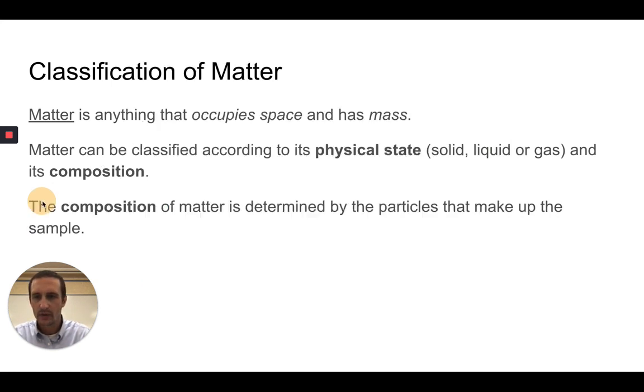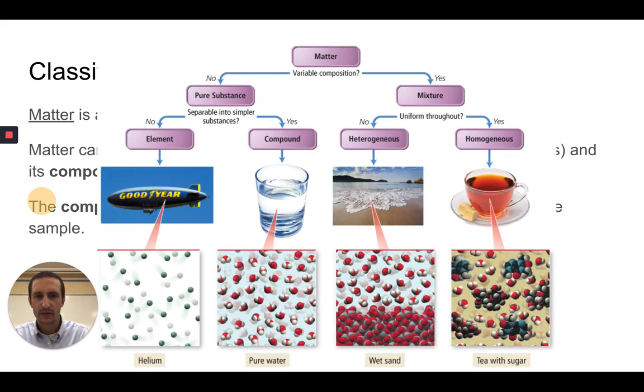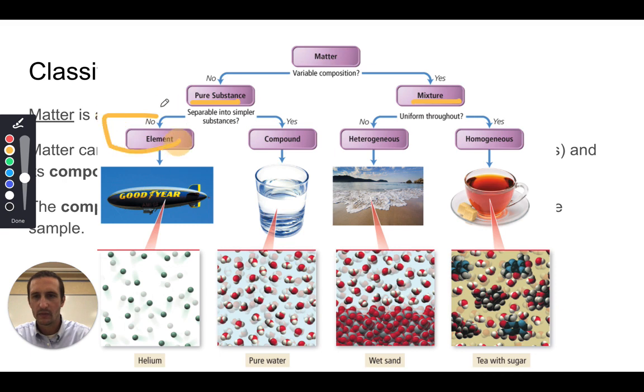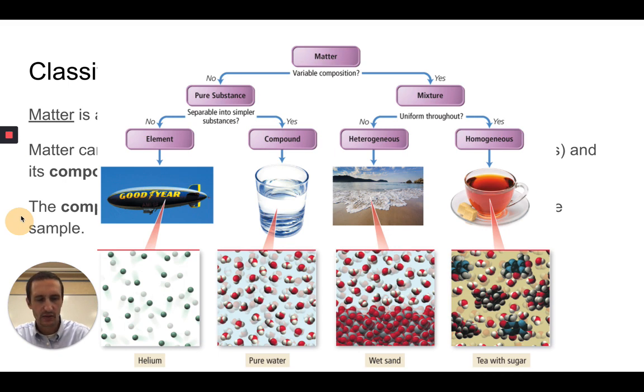When we start to talk about composition of the matter, composition is really determined by the particles that make up the sample. We can talk about if something is pure versus a mixture, and whether that substance is either an element or a compound. It really breaks down to the particle level.